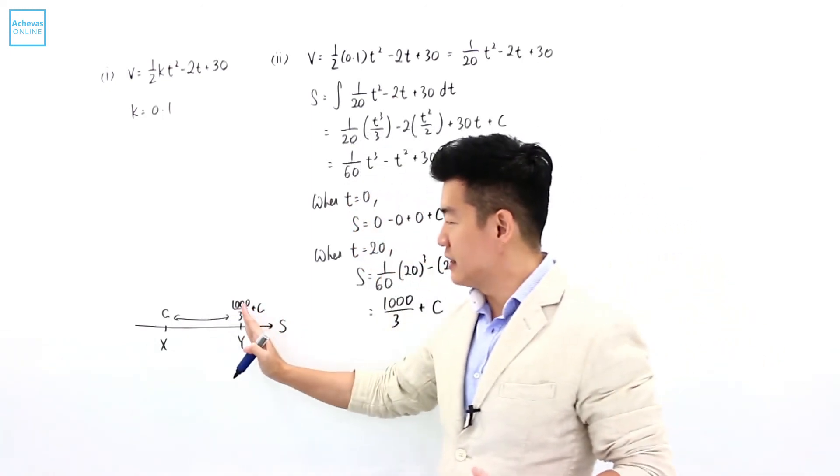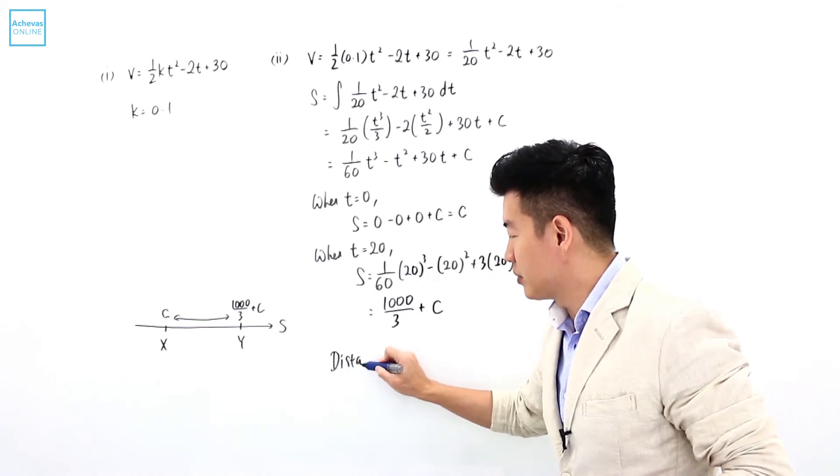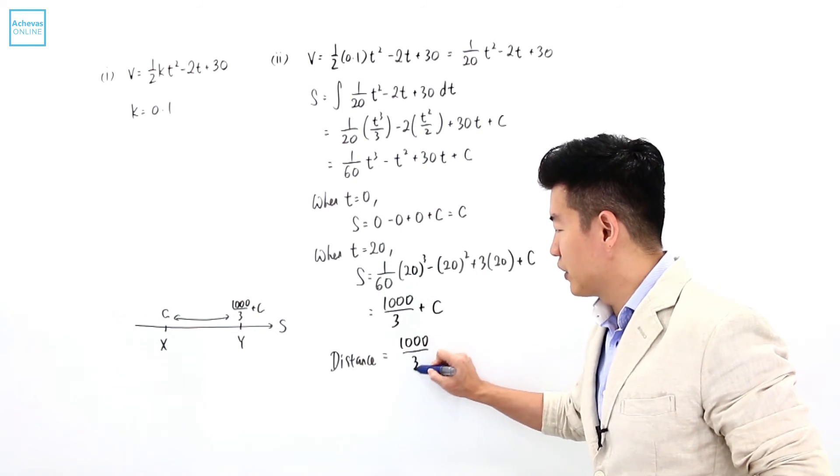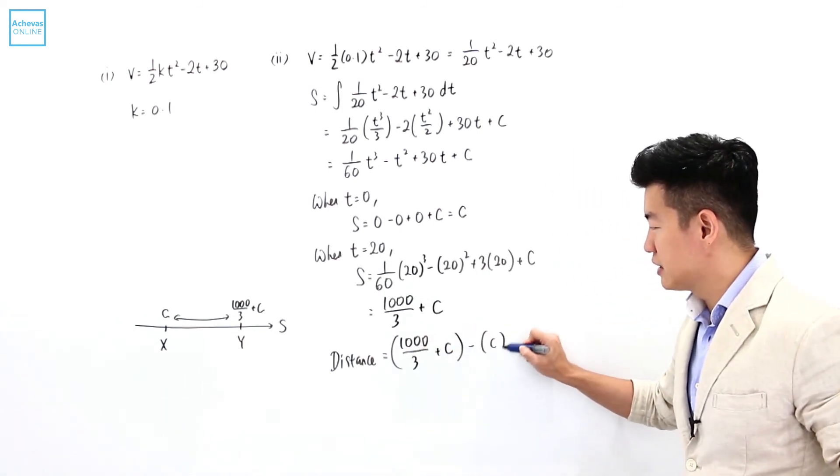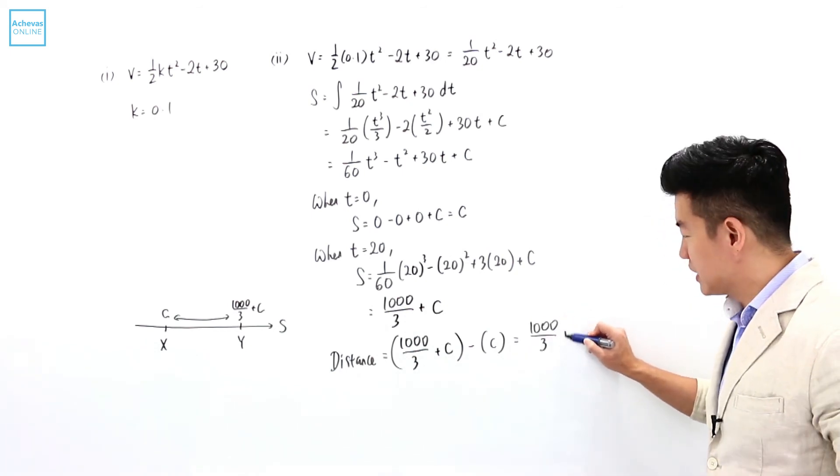what we need to do is to take this minus away this. So the distance that is required by the question is going to be 1,000 over 3 plus c minus c. So my answer is going to be equal to 1,000 over 3 meters.